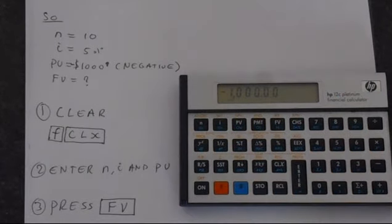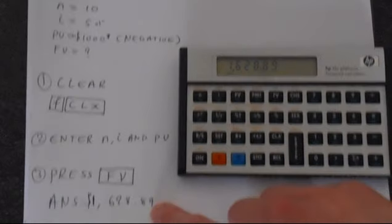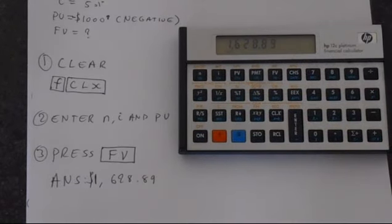And simply to calculate, we press the remaining button, the one in which we've not entered any information, and that's the future value. Press future value, and we get the answer $1628.69, which is what I got when I did the calculation previously.